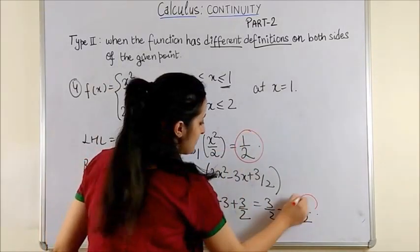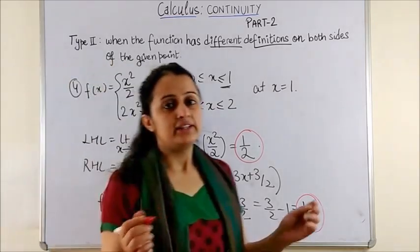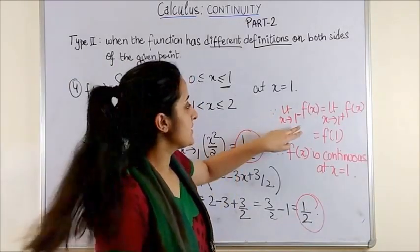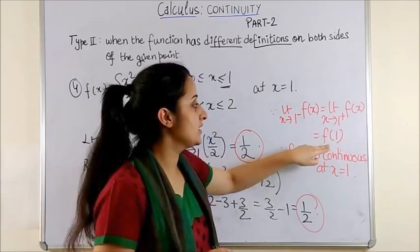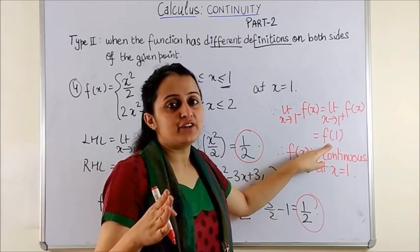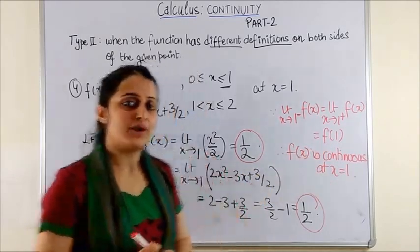LHL is half, RHL is half and the value of the function at 1 is half. This is how we conclude our answer. Since the left hand limit at 1 is the same as right hand limit at 1 is the same as value of the function at 1. Therefore, fx is continuous at x equal to 1.